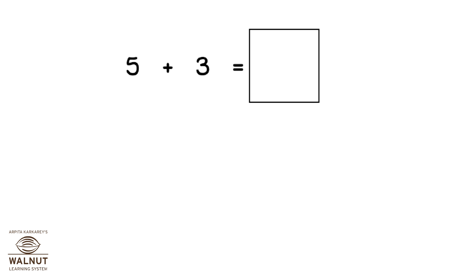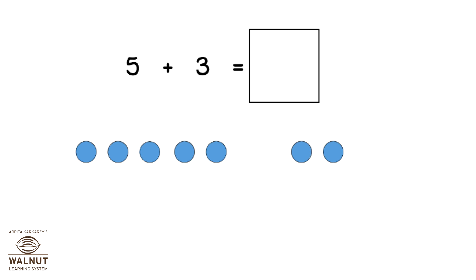How do we do 5 plus 3? We draw 5 dots. Then we draw 3 more dots. How many dots do we have? 5, 6, 7, 8. We have 8 dots. That is the answer.